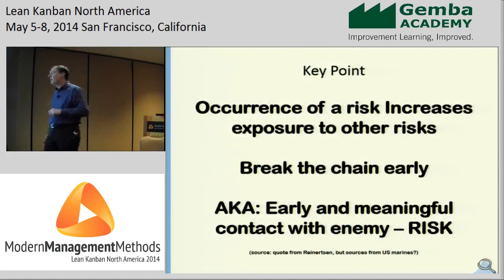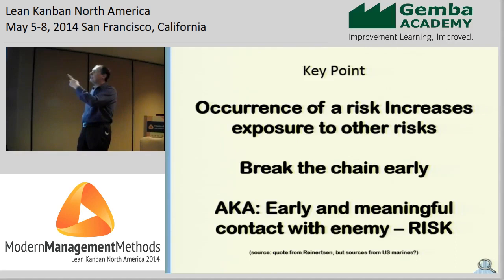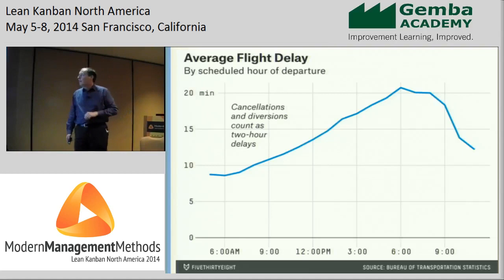Risk causes more risk to occur — an occurrence of risk is a leading indicator that you're going to have more risks in the future. You must break the chain early. This is known in military parlance: you need to make early contact with the enemy. Only by putting a system under stress early do you start finding out what risks you need to solve, and the earlier you do that, the earlier you start breaking the chains in that regenerative process of failure demand.